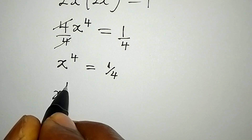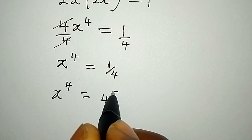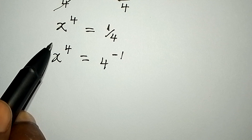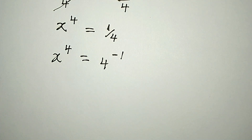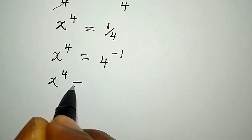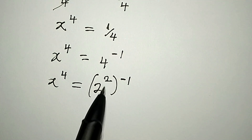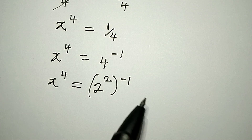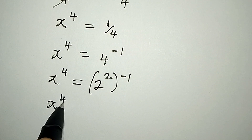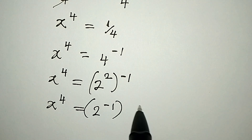Now this is the same thing as x to the power of 4 being equal to 4 to the power of negative 1. We can write 4 as 2 squared, so x to the power of 4 equals 2 squared to the power of negative 1, which is 2 to the power of negative 1, squared.